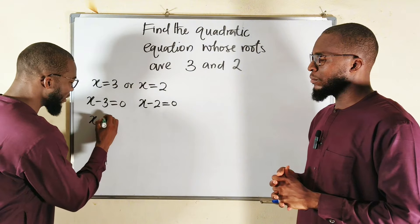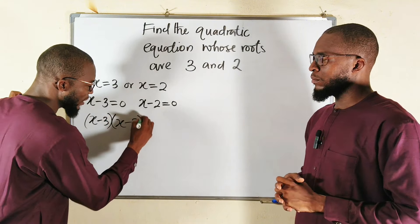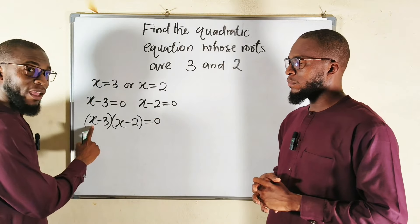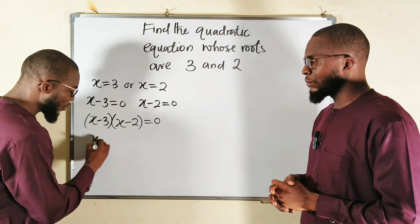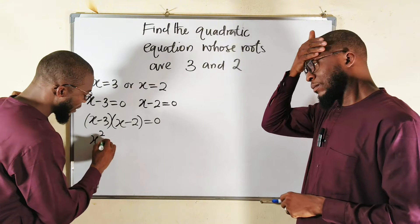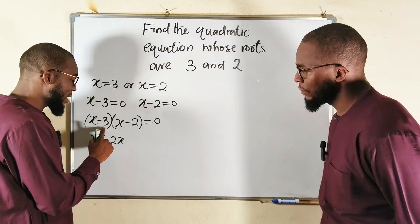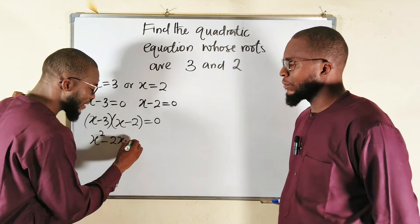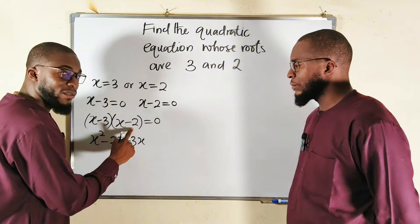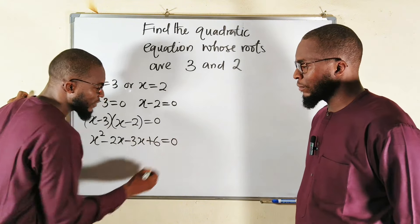So we take x minus 3, we multiply by x minus 2, and this will be equal to 0. x multiplied by x will give us x squared. Then x times negative 2 gives us negative 2x. Then negative 3 times x is negative 3x, and negative 3 times negative 2 gives us positive 6.